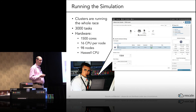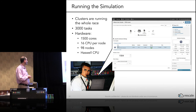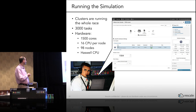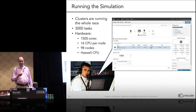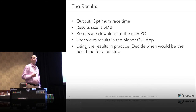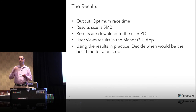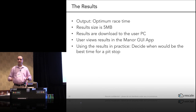Here's how they use it: they sit in the race, and this is a screenshot of the Rescale platform. You can see 1,500 cores — you choose the type of application, the hardware, and the configuration — and they are actually running 3,000 tasks, two tasks per node, which gives them a lot of results to decide upon. The results are pretty small — about five megabytes — coming up on the head node, then downloaded to the Meno GUI application, which shows them the results so they can make a decision.